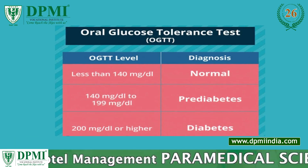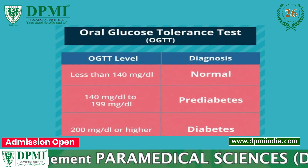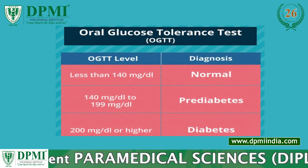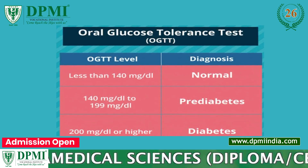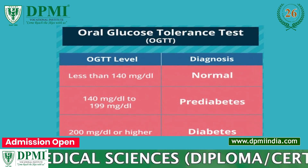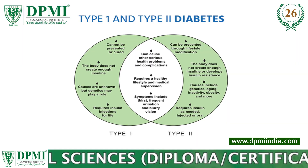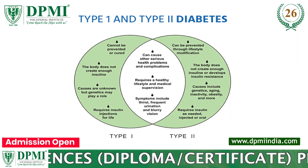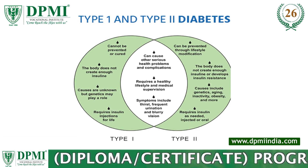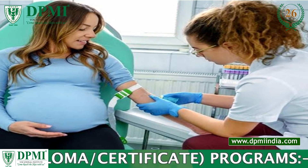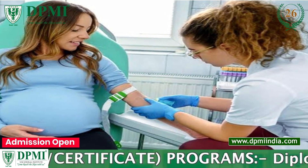a result is considered normal when the blood glucose level is less than 140 mg/dL 2 hours after consuming a glucose solution. A blood sugar level of 190 mg per deciliter or 10.6 mmol per liter indicates gestational diabetes.